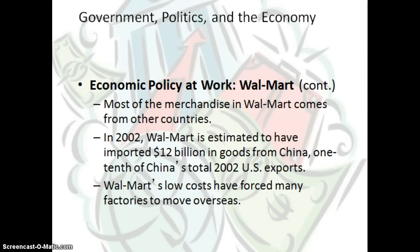Because Walmart outsources to other countries, most of the merchandise in Walmart comes from other countries because it can be made more cheaply. The wages paid to workers in other countries are incredibly low, so the profit margin on those manufactured goods is even higher than if those products were produced here. In 2002, Walmart is estimated to have imported $12 billion or more in goods from China, which was one-tenth of China's total exports to the U.S. in 2002. Because of their low costs, Walmart has also forced other companies to outsource or send their factories overseas.